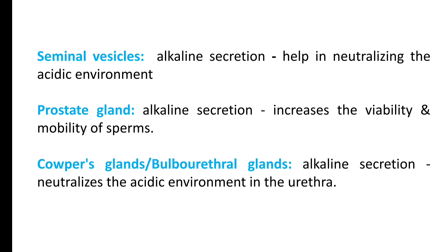The next gland is the Prostate Gland, which also produces an alkaline secretion. This secretion increases the viability and motility of sperm — helping sperm move and improving their mobility. The third gland is Cowper's Gland, or Bulbourethral Gland, which also helps to neutralize the acidic environment in the urethra.